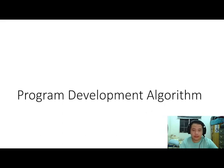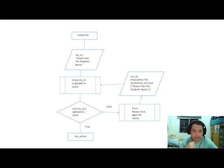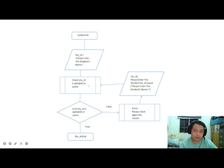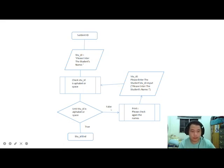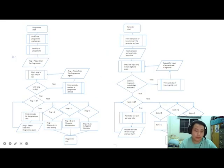These are the algorithms. The first one is how we get the student ID, which is the user's name. We start, then request for input, then check whether the input contains only alphabets and spaces. If it is not only alphabets and spaces, we remind the user and request input again. When it is valid, the student ID is obtained and we proceed to the next part of the program.